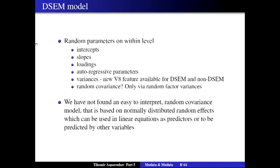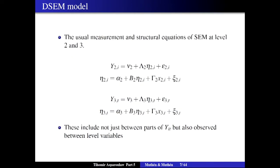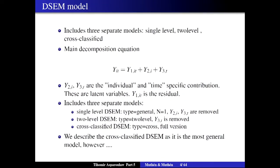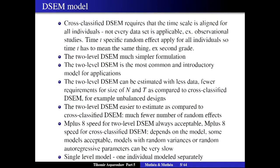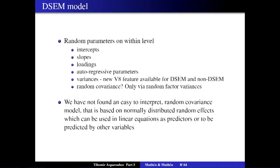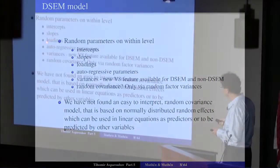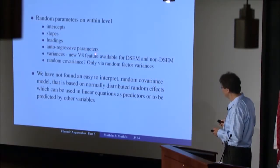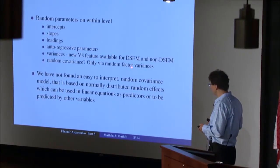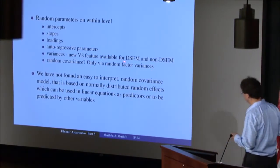We have random intercepts, and the fundamental components are considered random intercepts. In addition, slopes can be random, loadings can be random, autoregressive parameters can be random, and variances can be random as well — as discussed yesterday. That's a version 8 feature available not just for DSEM models but also implemented for non-DSEM models with Bayesian estimation.